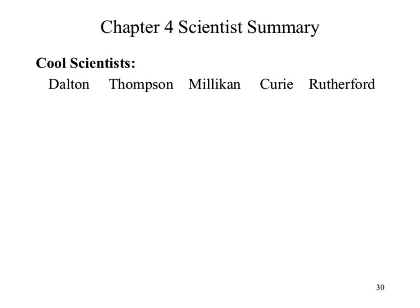So that's our Chapter 4 Scientist Summary. Dalton: atomic theory, his five rules — go back and look at those and identify which ones we invalidated with later discoveries. Thompson: subatomic particles, and in particular electrons, using the cathode ray tube — also remember the vacuum associated with that. Millikan: the oil drop experiment, determined the exact charge on electrons. Curie: alpha particles, radioactive sources. Rutherford: our modern model of the atom with a nucleus, using the gold foil experiment.